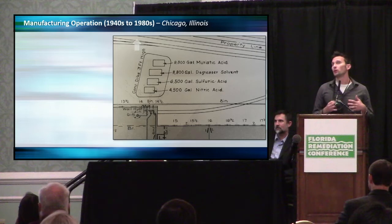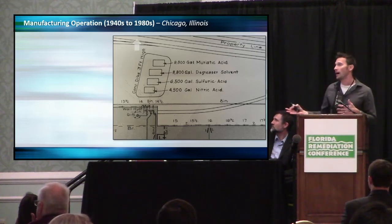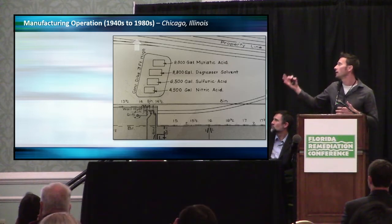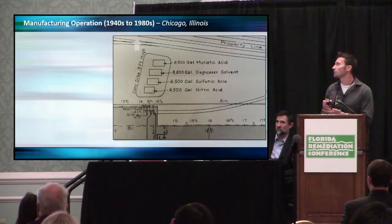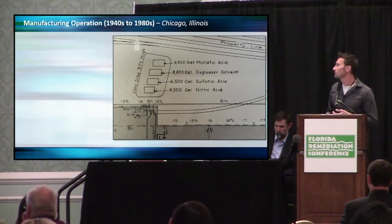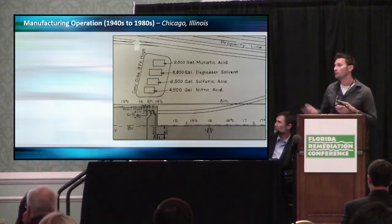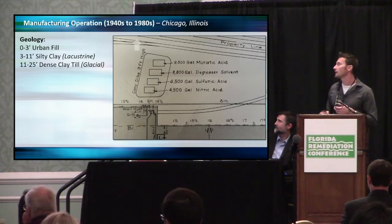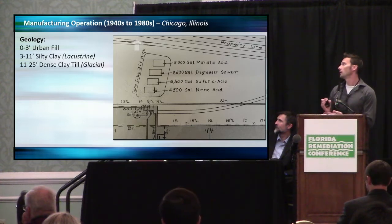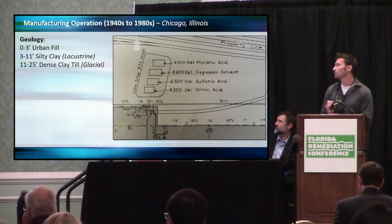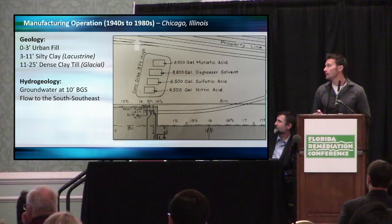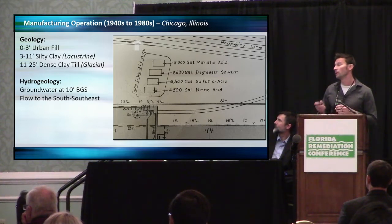Now more of the why — why do we want to use these tools? The best way to answer that is with a case study. This was a former manufacturing operation in Chicago that operated for about 40 years from the 1940s to the 1980s. A fire insurance map from circa 1950 shows four ASTs on site, one of which was a degreasing solvent tank. The geology at this site: the top three feet was coarse-grained urban fill; down to 11 feet was a silty lacustrine clay from Lake Michigan deposits; and down to 25 feet was a dense clay glacial till, extremely dense and hard. Groundwater is about 10 feet down sitting on top of that glacial till, with flow to the south-southeast.